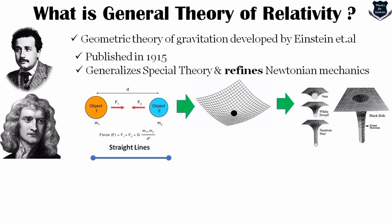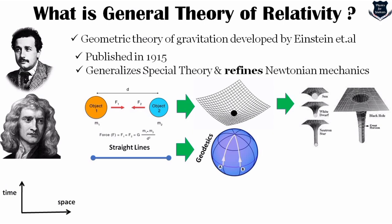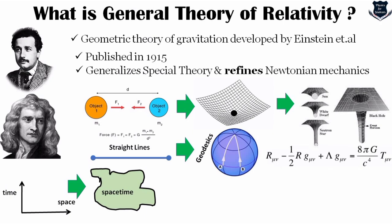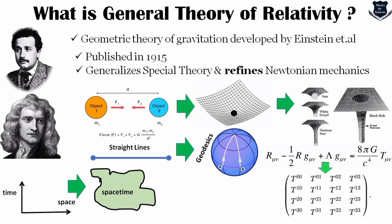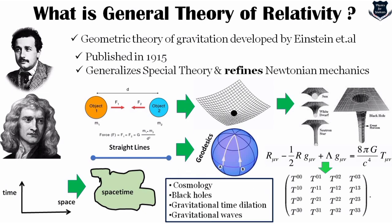From Newton's law we go to spacetime curvature, which generalizes into cosmological black holes. Straight lines in Newtonian physics are extended to geodesics. Space and time as independent identities are lumped into spacetime. Einstein's field equations describe the entire curvature of spacetime and the physics of general relativity in terms of tensors. GR has given us a huge opportunity to explore cosmology, black holes, gravitational time dilation, and gravitational waves — including gravitational lensing, gravitational redshift, the Shapiro time delay, and singularities.